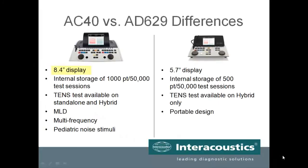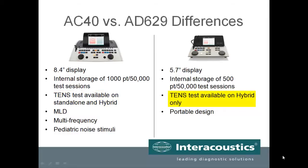Additional differences include a larger display of 8.4 inches on the AC40 versus the 5.7-inch display on the AD629. Both devices have internal storage, but there is 1,000 patient storage for the AC40 versus 500 on the AD629. Differences in the testing function include the TENS test, which is available in both standalone and hybrid models on the AC40, but only the hybrid model for the AD629.